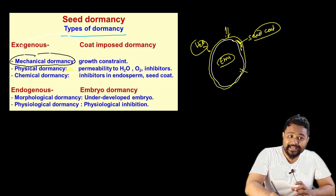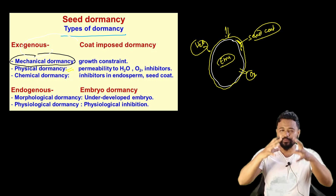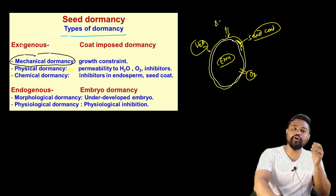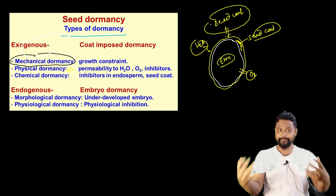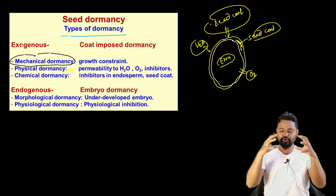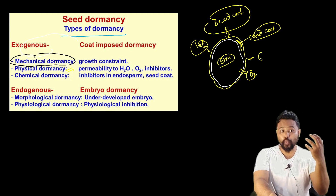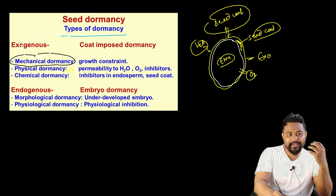Because of the hard seed coat, oxygen gas exchange is blocked. So mainly, the seed coat or cover is responsible for this type of dormancy. This is called exogenous dormancy - exo meaning outside the seed.